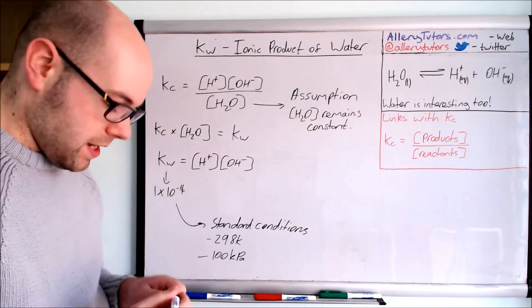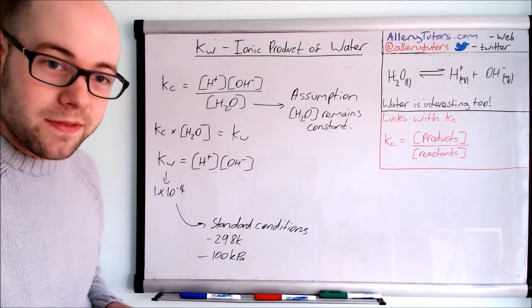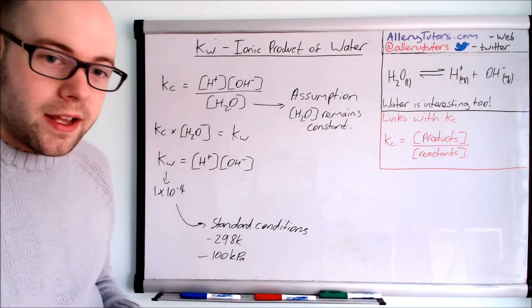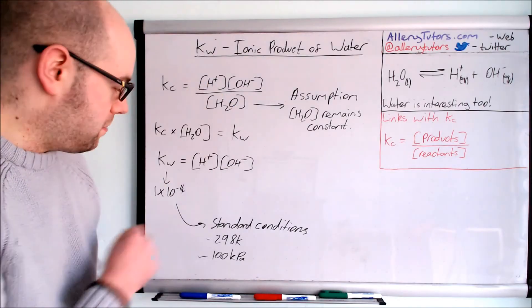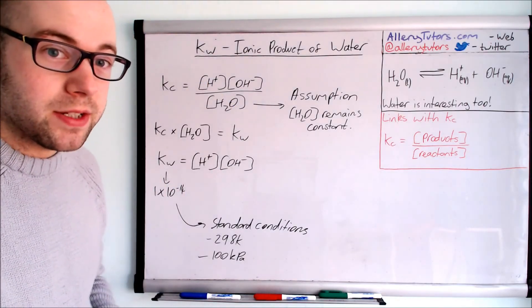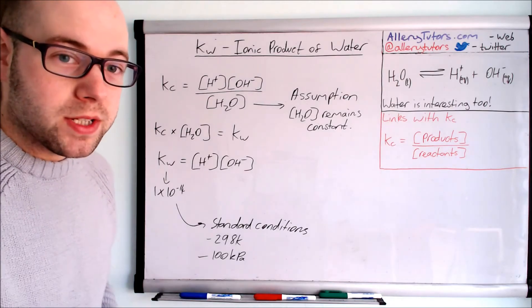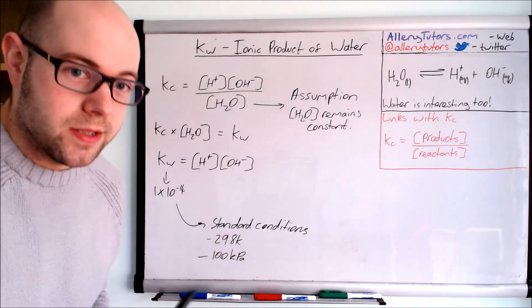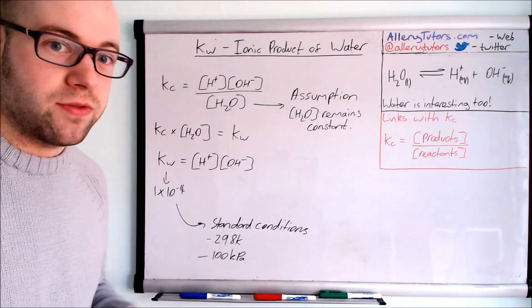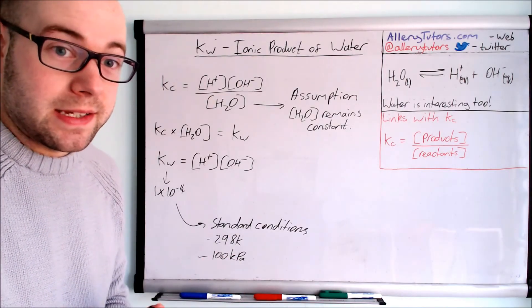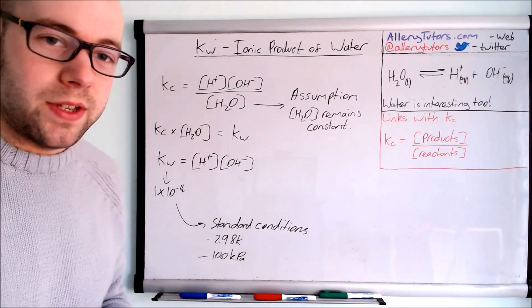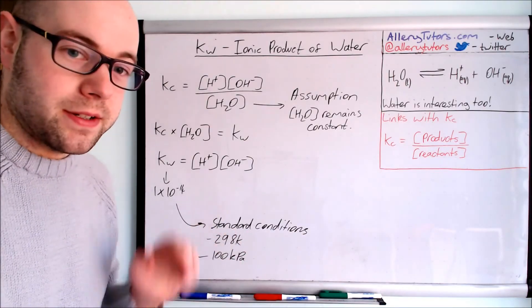This value here might seem quite significant because you'll see this 14, and you'll notice that the pH scale goes from 0 to 14. This plays a big role in the reason why the pH scale for most chemicals at these conditions ends at 14. But you do get some extremes where you can go beyond 14 and less than 0 if the conditions are not at these conditions.